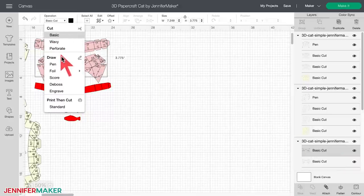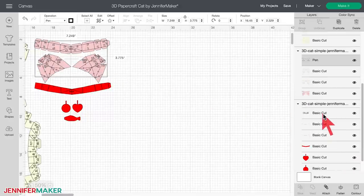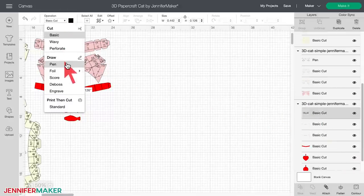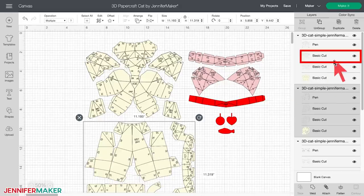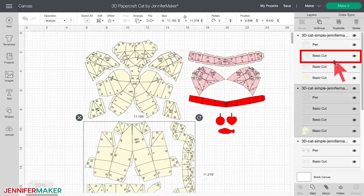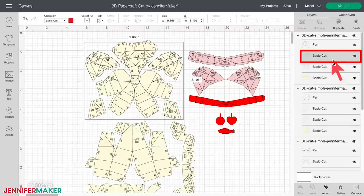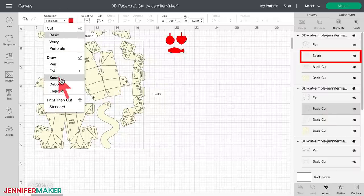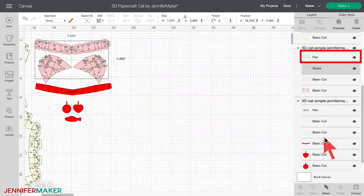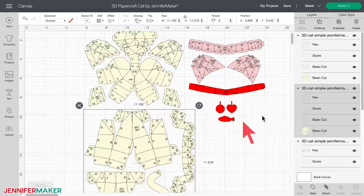If you're not using a pen, you can delete that layer or you can hide it with the eye icon. Now find a score layer, which in my pattern is the second layer of each group. So select it in the layers panel. Then go up to the operation menu and choose score. And do this for all of those score layers.